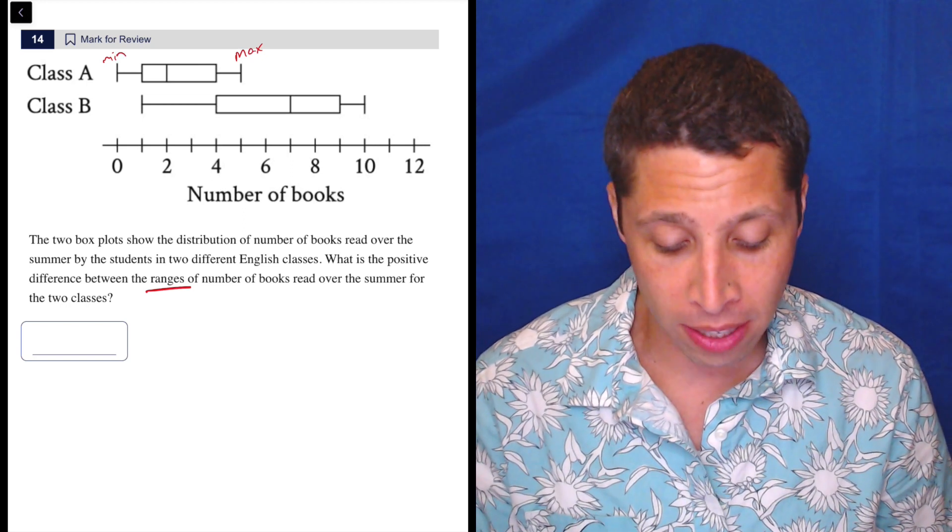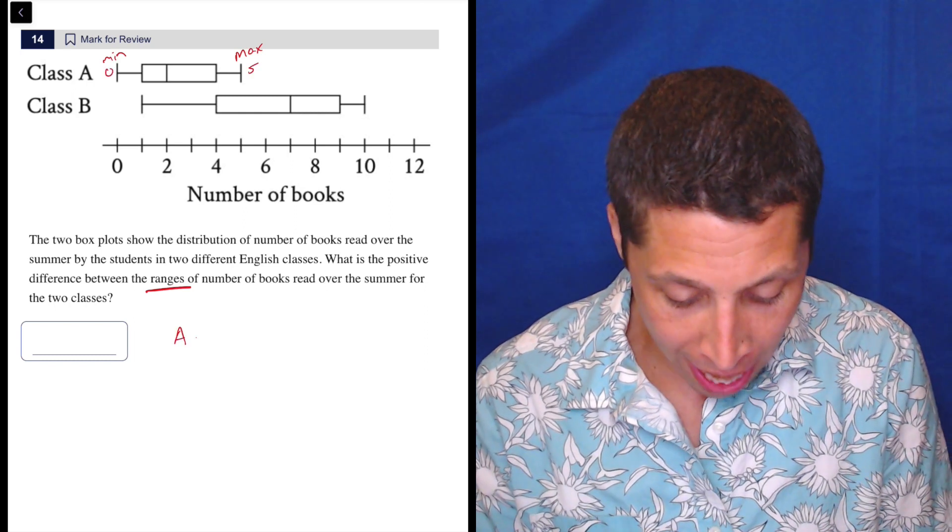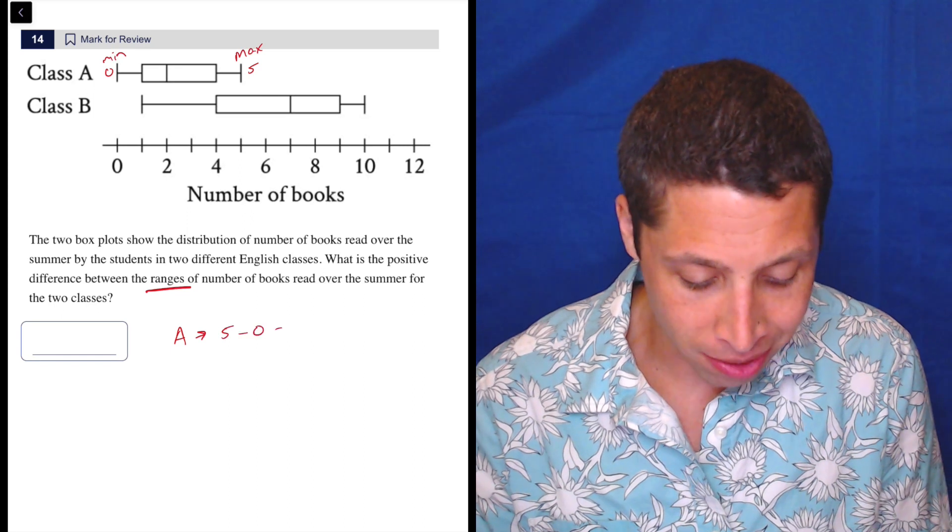So we're looking for the range. That's just the difference. So this is 5 and this is 0, so the range for A is 5 minus 0, which is 5.